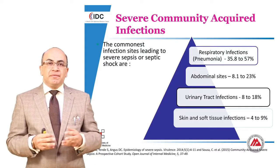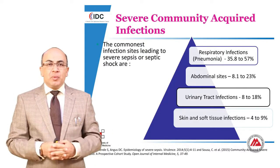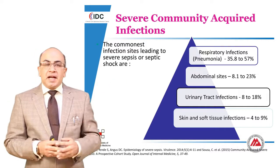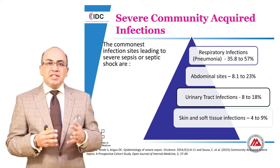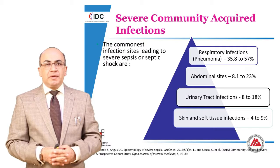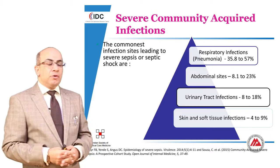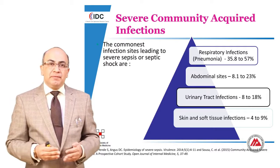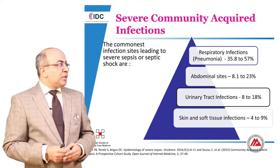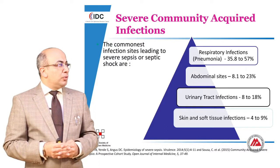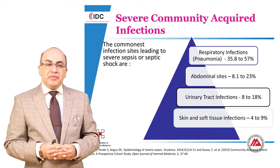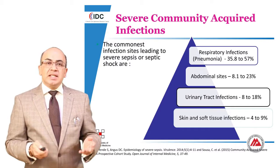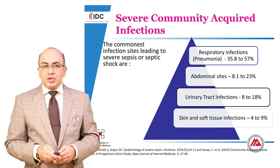Amongst the various infections being acquired from the community, respiratory tract infections form the biggest chunk, accounting for nearly 35 to 57 percent of the total infections. Abdominal sites follow at about 23 percent, with urinary tract infections and skin and soft tissue infections after that.